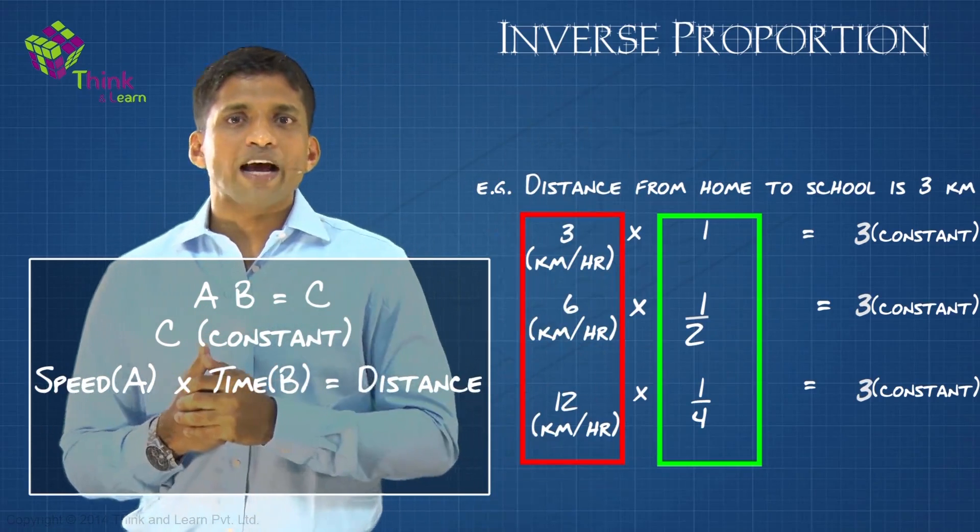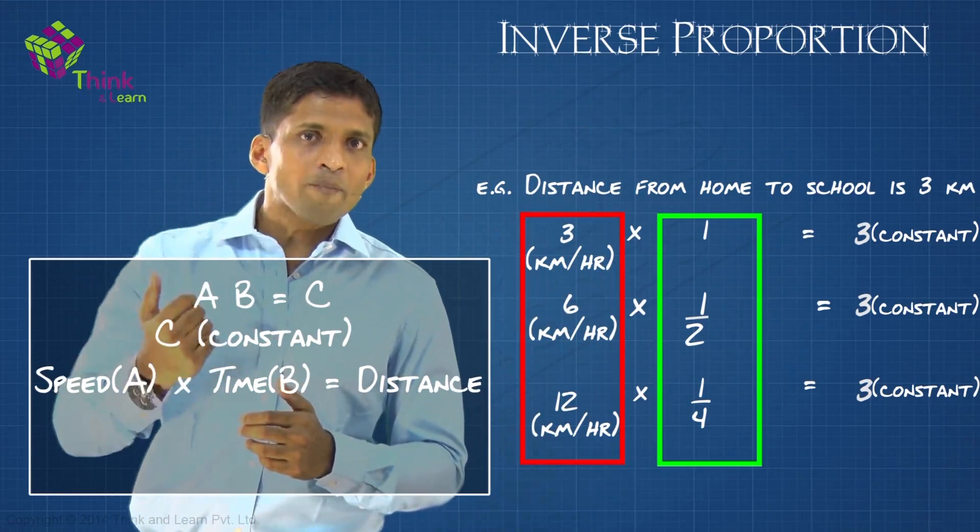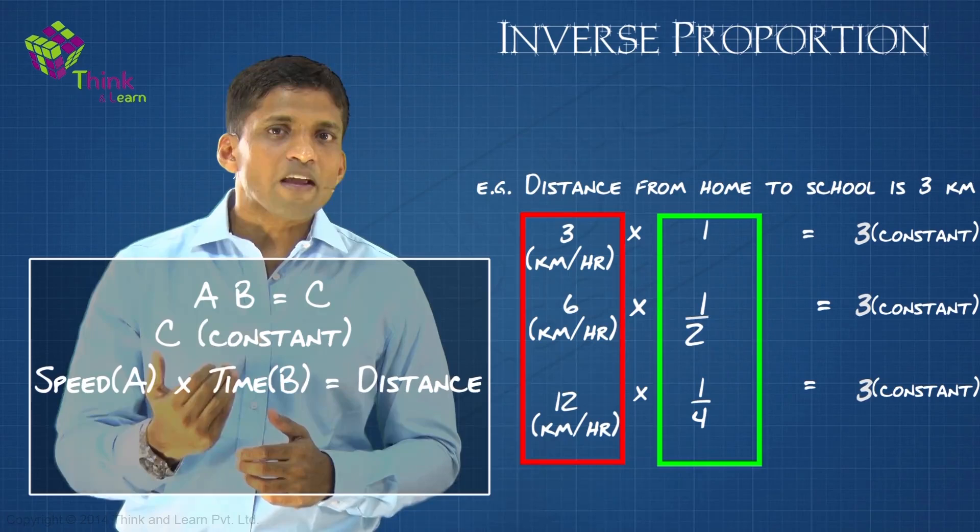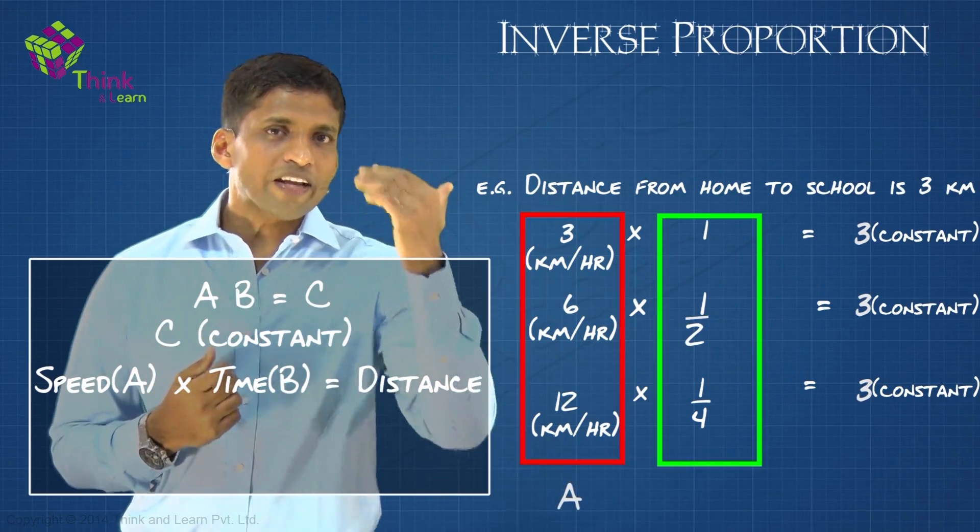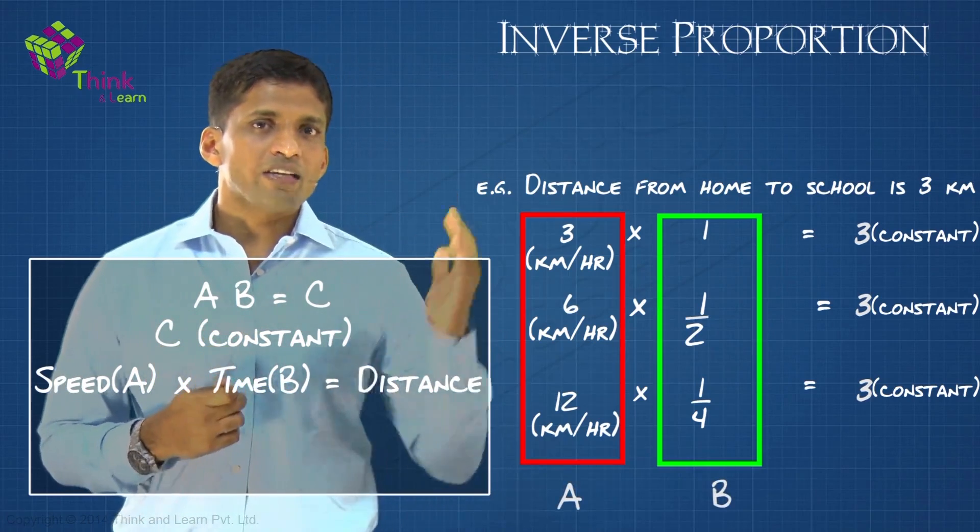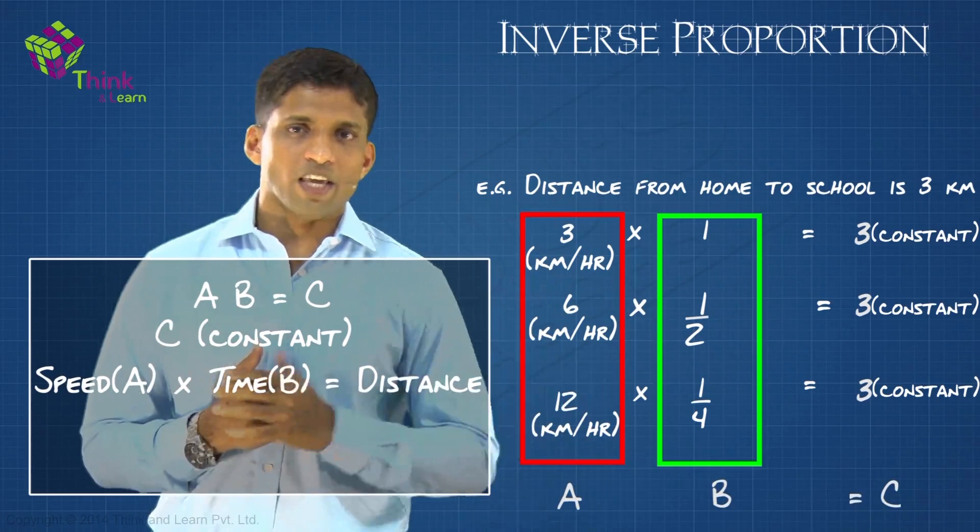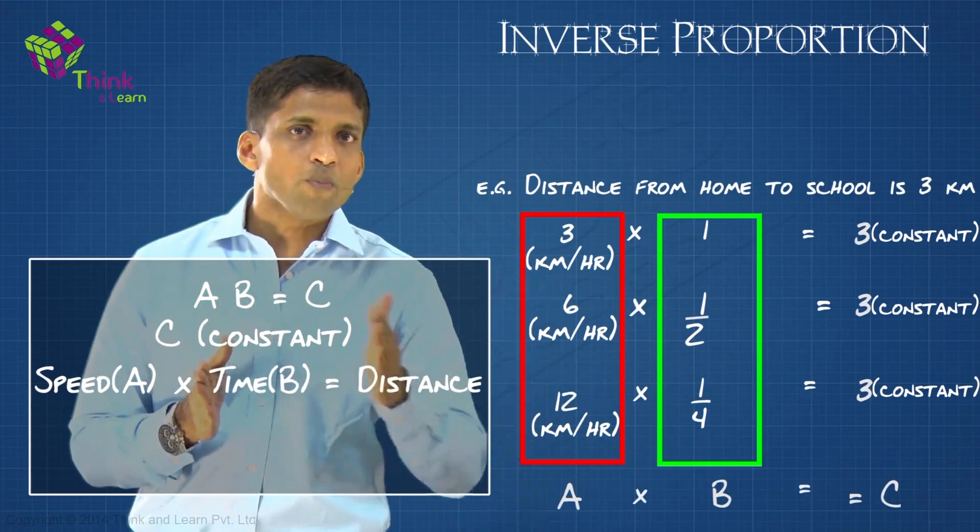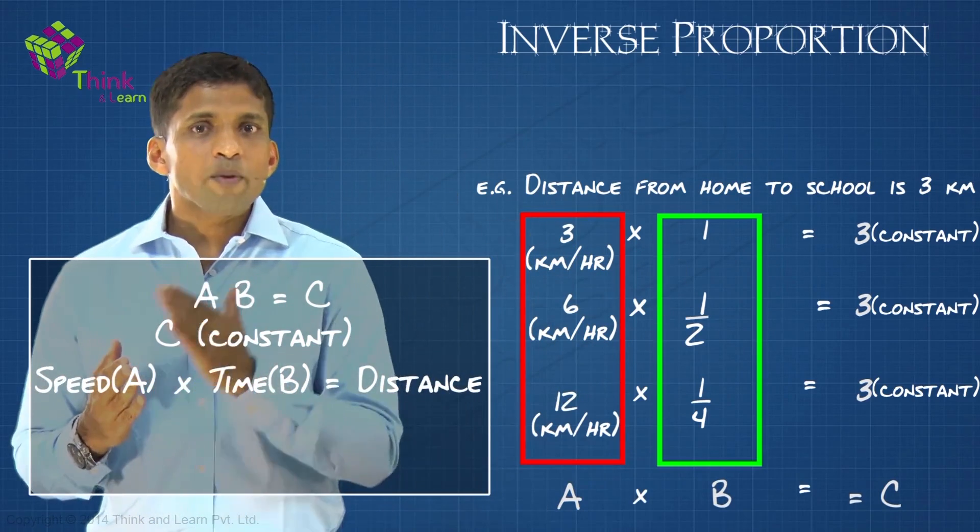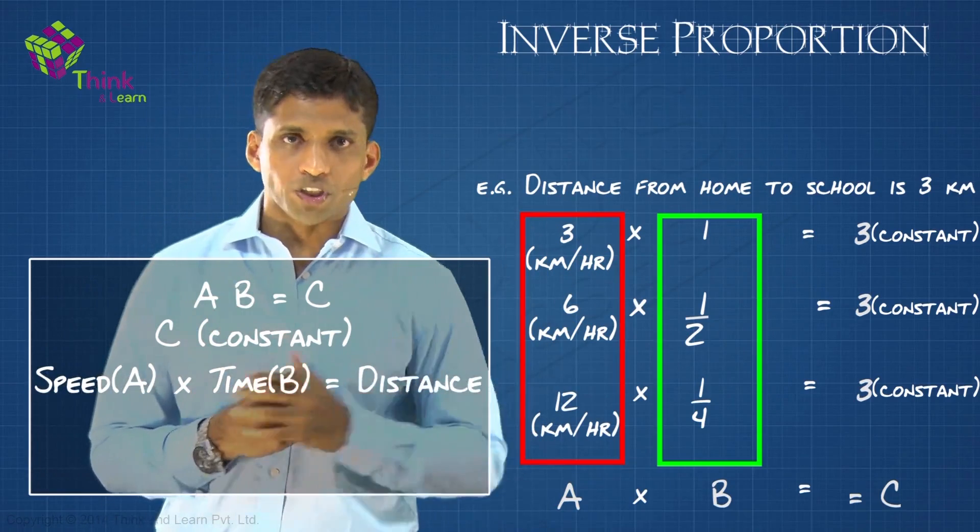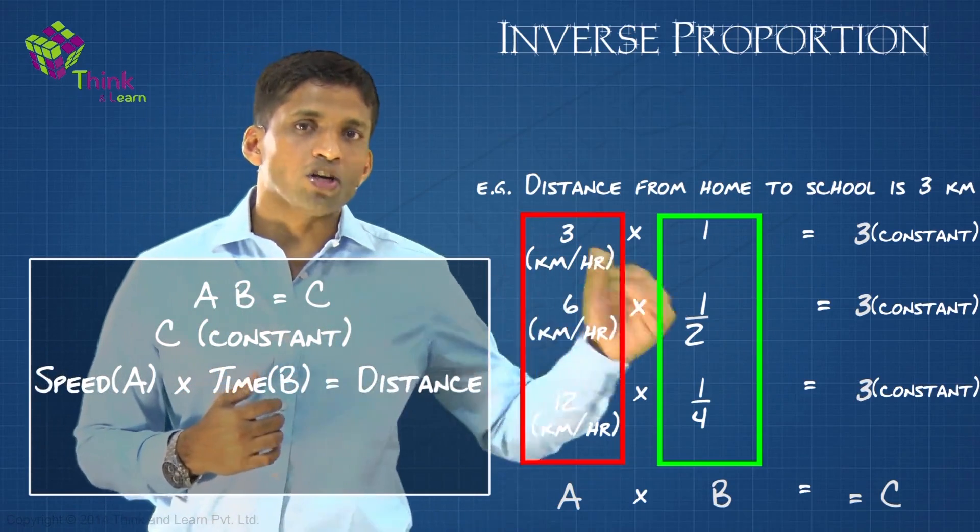In that kind of scenario, if I replace: instead of speed, if I replace it by A; instead of time, if I replace it by B; instead of distance, if I replace it by C. It's a scenario where A into B is C. A and B are said to vary in inverse proportion if A × B is a constant.